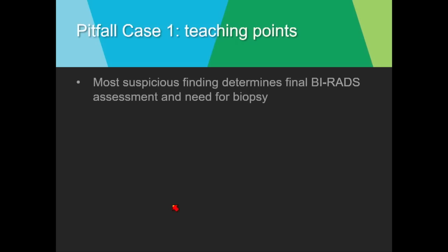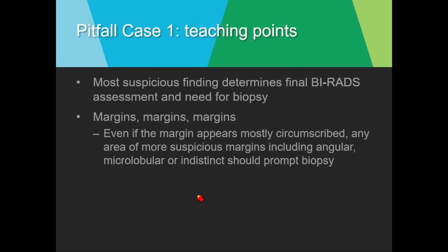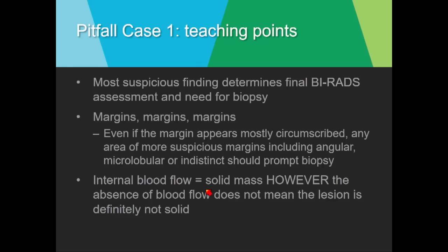The most suspicious finding you see, either by ultrasound or mammography, determines your final BIRADS assessment and the need for biopsy. Often the key is in the margins — carefully evaluate them. Even if most margins appear well-circumscribed, if there's even one small area that is not — including angular, microlobular, or indistinct — this should prompt biopsy. Internal blood flow is helpful when present, but if it's not present, it does not mean there is no internal vascularity, and it does not mean it's a cyst.